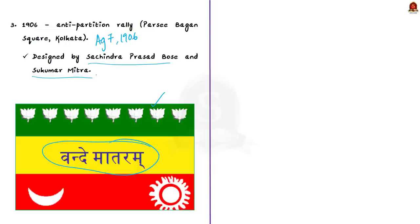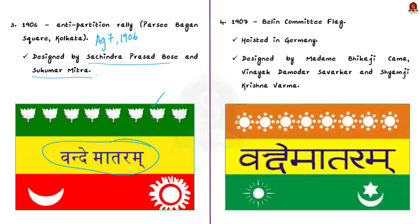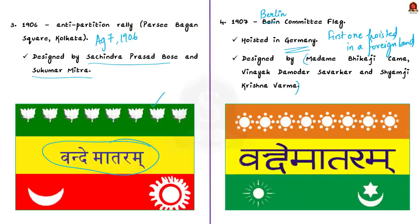Then the next year another flag was hoisted in Germany in 1907, called the Berlin Committee flag. It was collectively designed by Madam Bhikaiji Cama, Vinayak Damodar Savarkar — also referred to as Veer Savarkar — and Shyamji Krishna Verma. As you can see, this flag is also a tricolour flag and also had the terminology Vande Matram. Note that this was the first Indian flag to be hoisted in a foreign land.